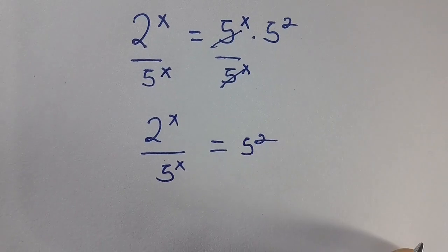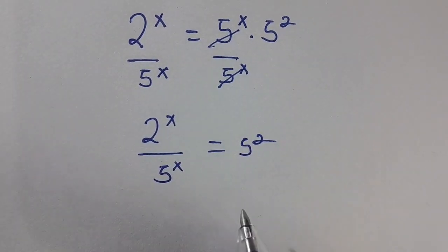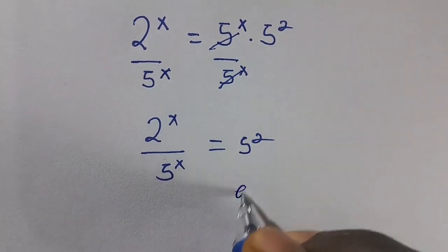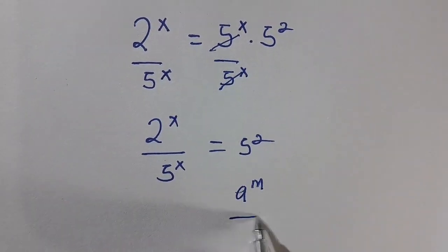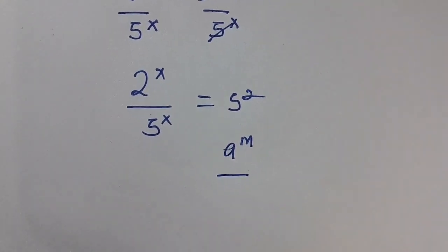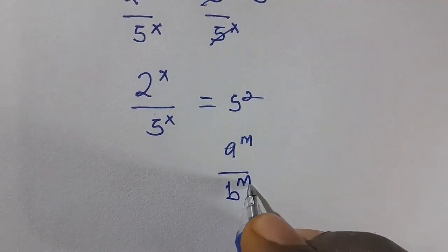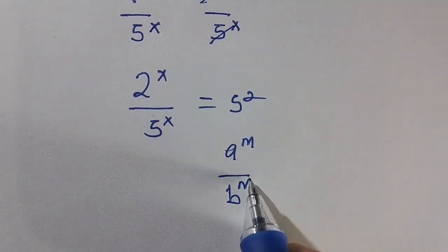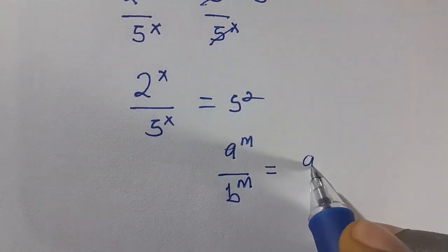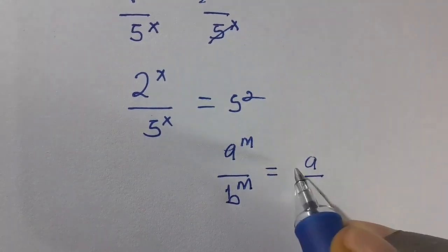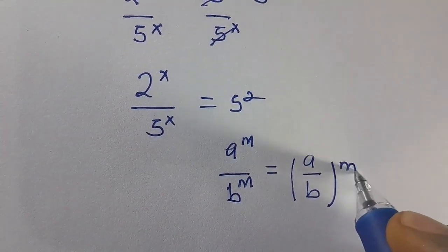From here, according to the law of indices, when you have two numbers connected with a division sign — a raised to the power m divided by b raised to the power m — they have the same power, so we can write this as a divided by b, all raised to the power m.